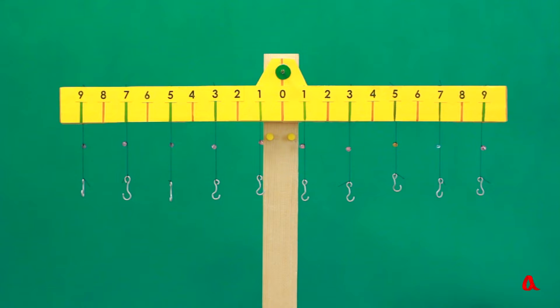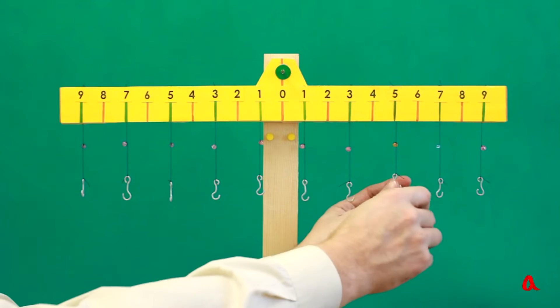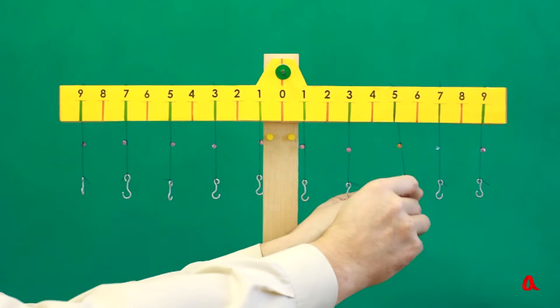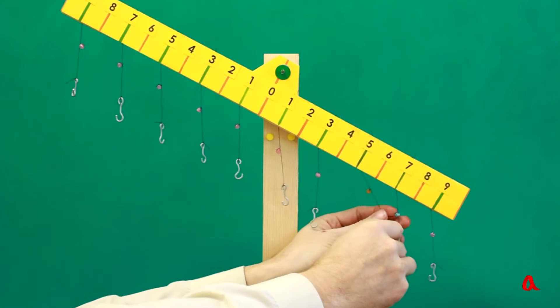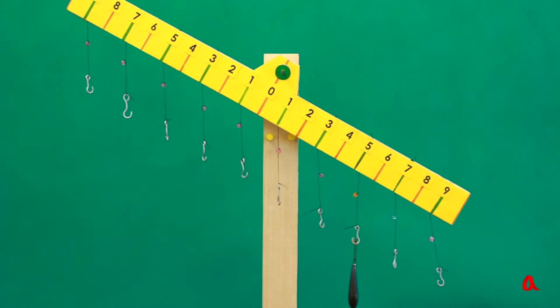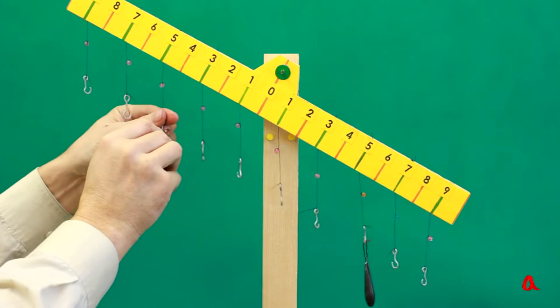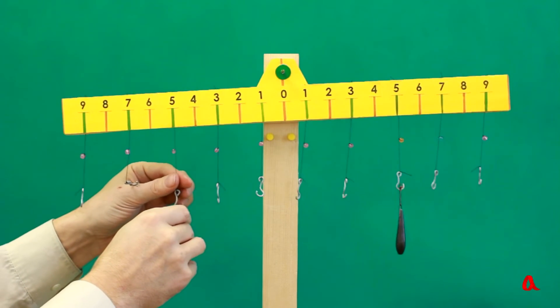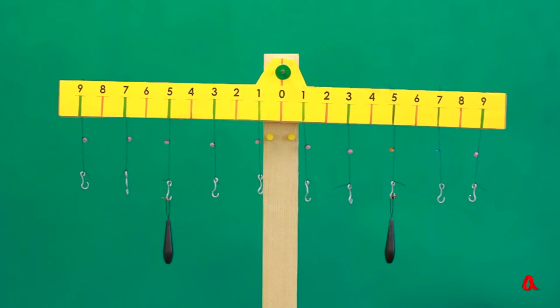Let's take two equal loads and suspend one of them at a distance of 5 units from the lever's axis. This distance is called a load's arm. It's evident that the second load should also be suspended on a 5-unit arm. We can see that the loads balance each other up.